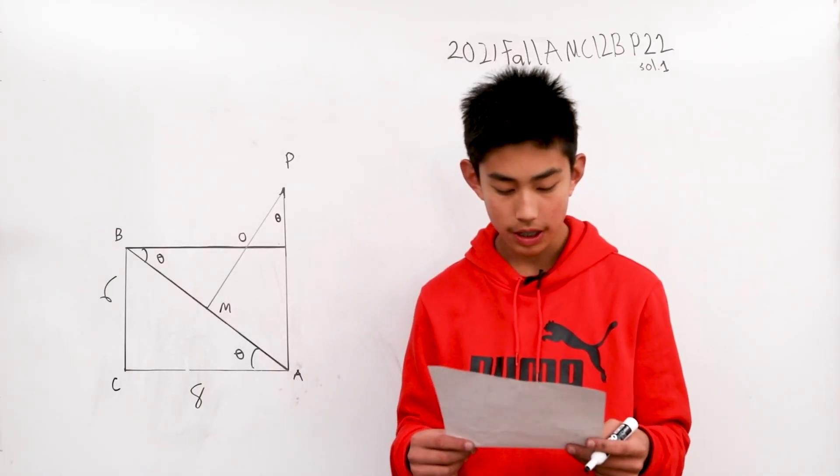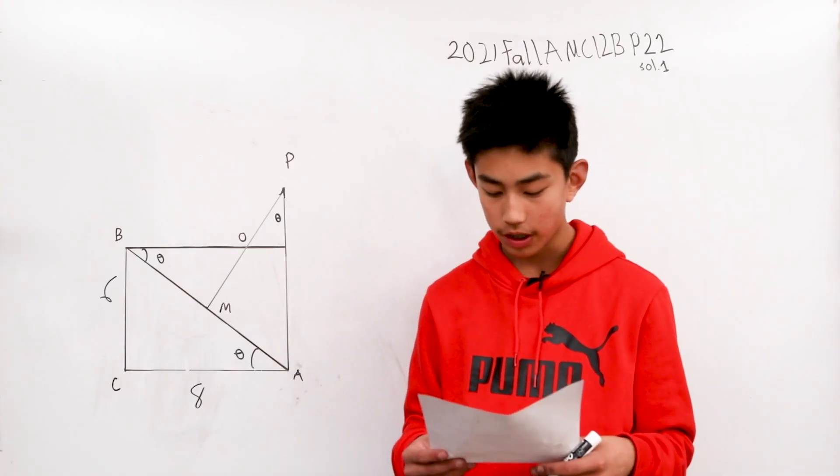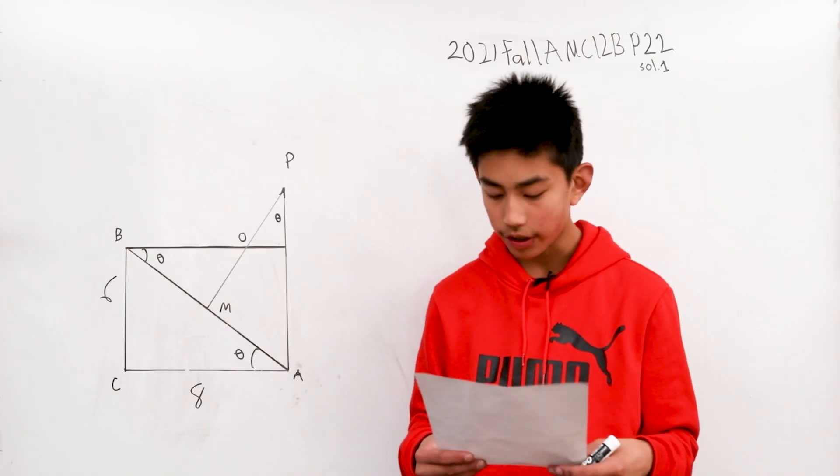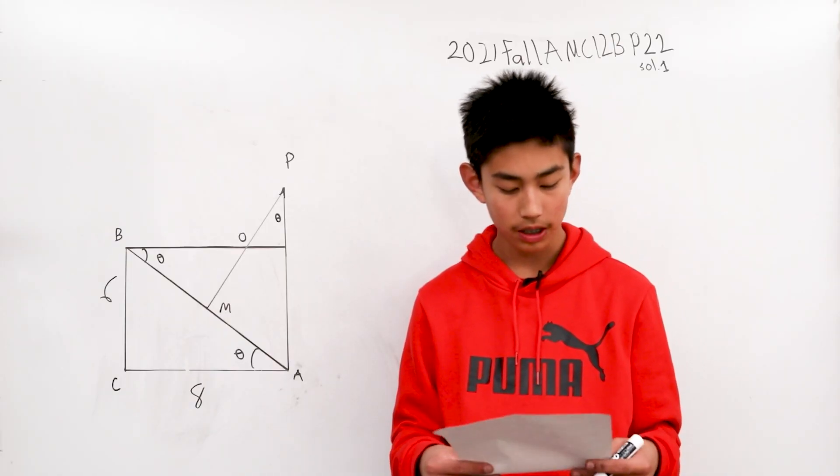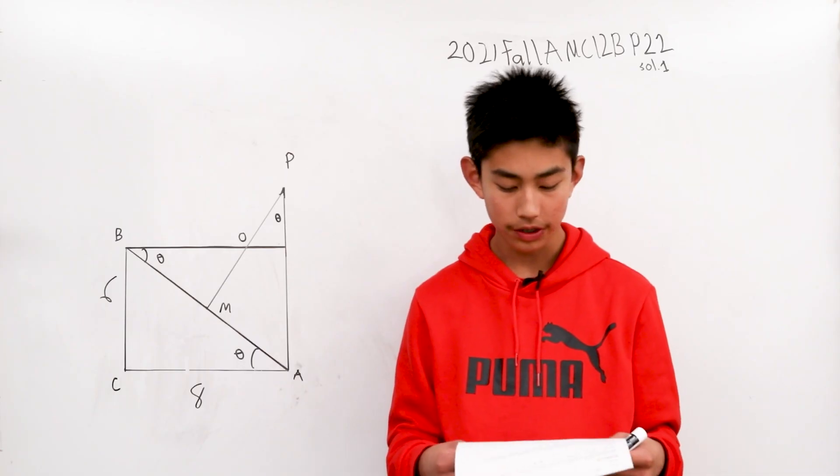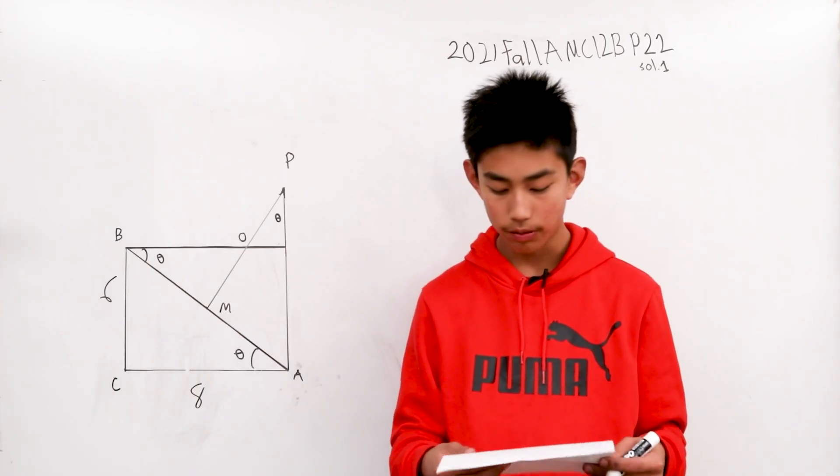Right triangle ABC has side lengths BC equals 6, AC equals 8, and AB equals 10. A circle centered at O is tangent to line BC at B and passes through A. A circle centered at P is tangent to line AC at A and passes through B. What is OP?